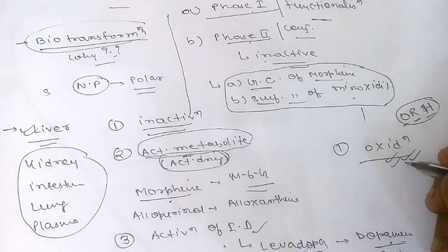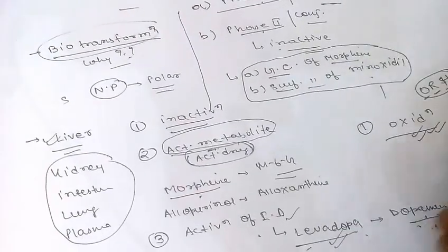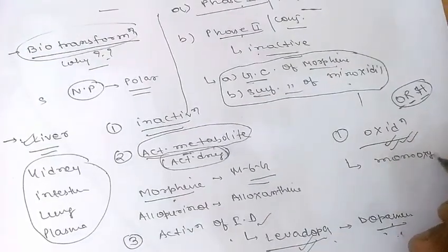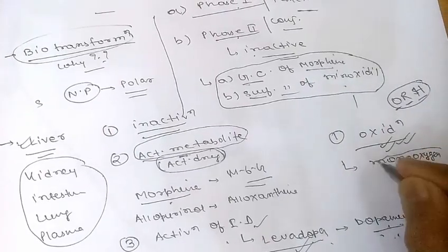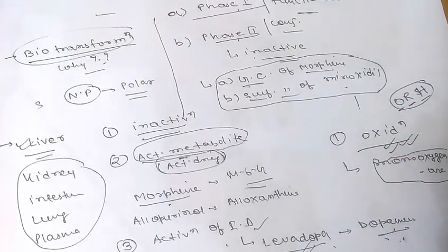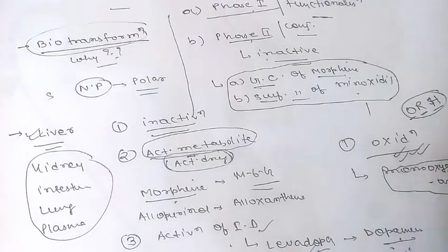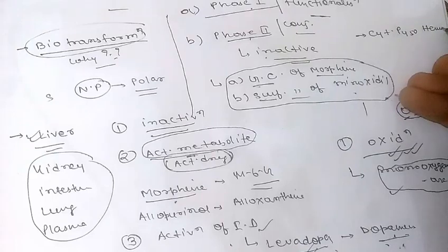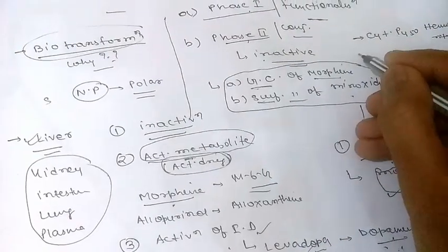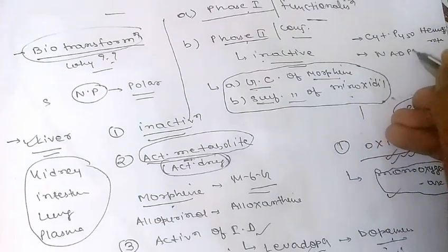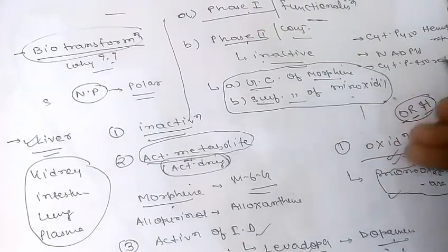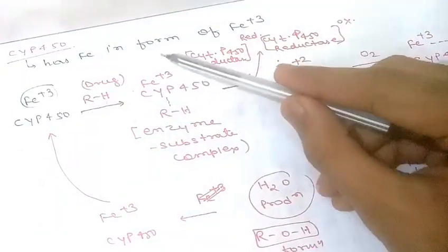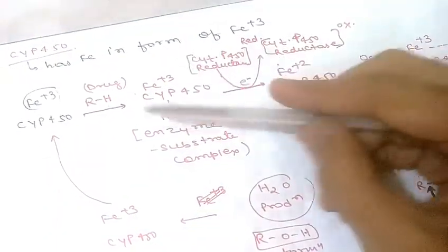Oxidative reactions are mostly carried out by a group of monooxygenases in the liver. In the final step, these reactions require cytochrome P450 heme protein, NADPH, cytochrome P450 reductase, and molecular oxygen.